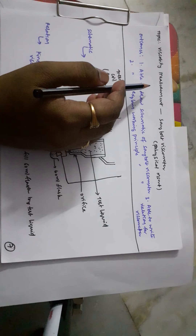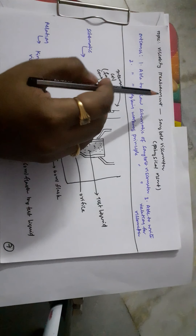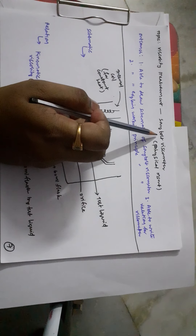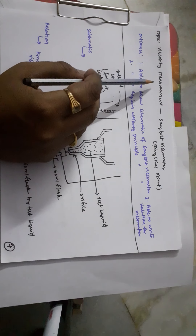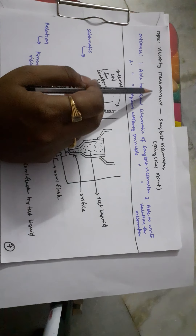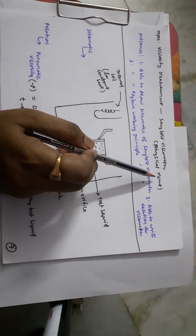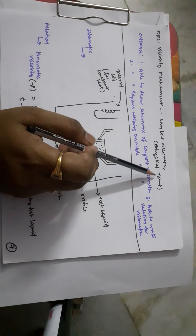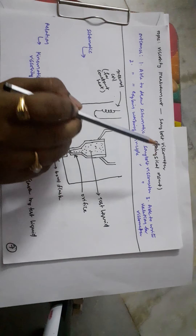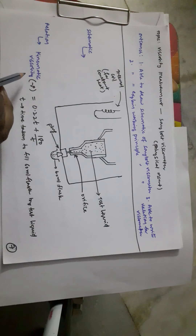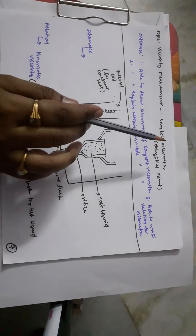Hello students. In this video we'll see the working principle of the Saybolt Viscometer. The topic of this video is viscosity measurement and the subtopic is Saybolt Viscometer. It is a physical measurement application, and usually experimentation is done as part of the measurement for viscosity. The kinematic viscosity is measured using the Saybolt Viscometer.